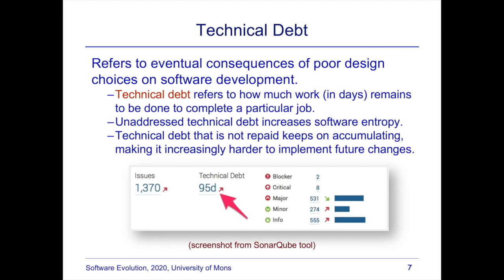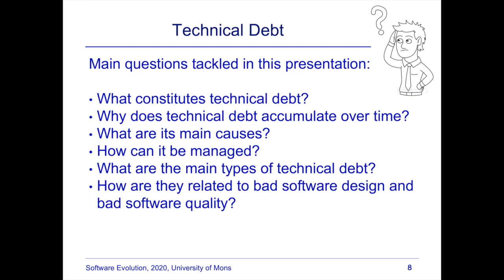Technical debt is typically measured in terms of time. For example, in SonarQube — a tool for measuring technical debt — a given system's technical debt was computed as 95 days. That system had 1,370 issues of different criticalities, and the total time to resolve all of them would be 95 days. If you wait longer, new issues may appear and the technical debt will continue to increase.